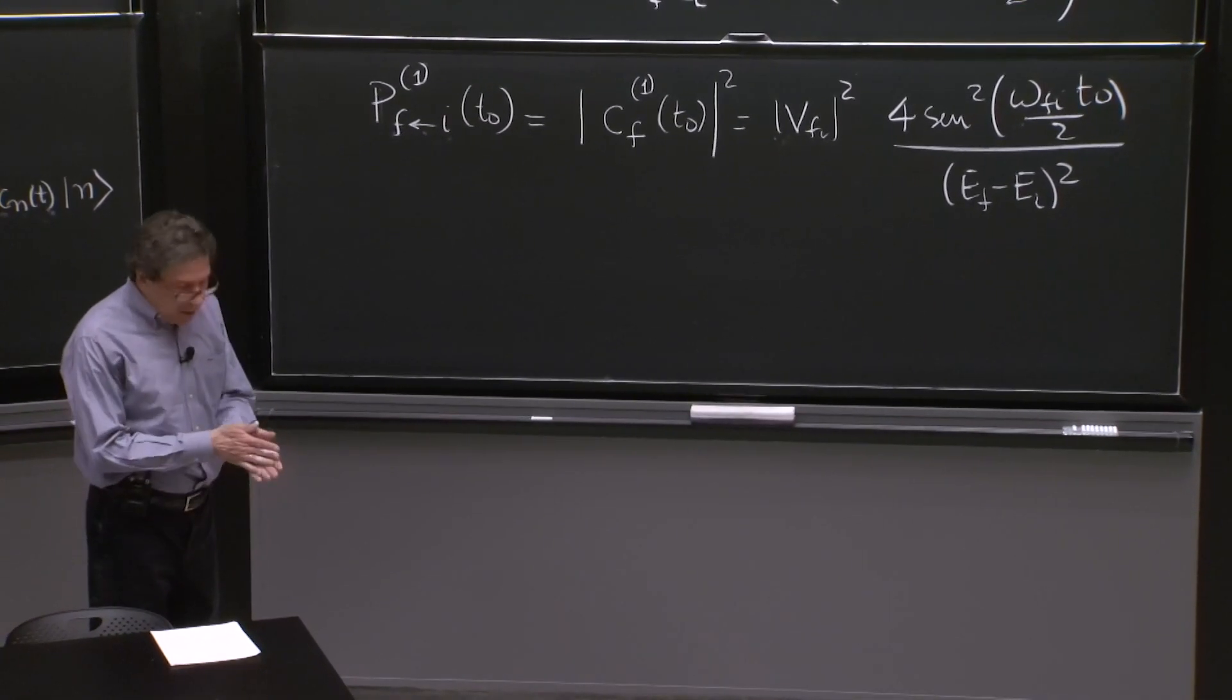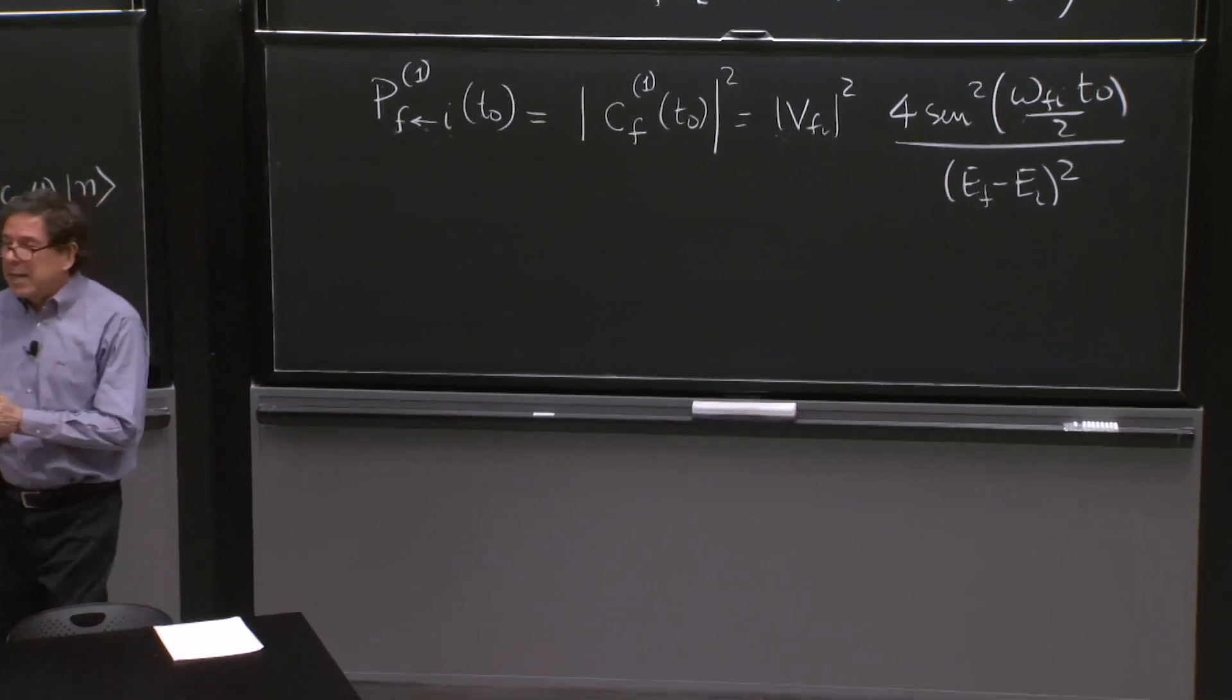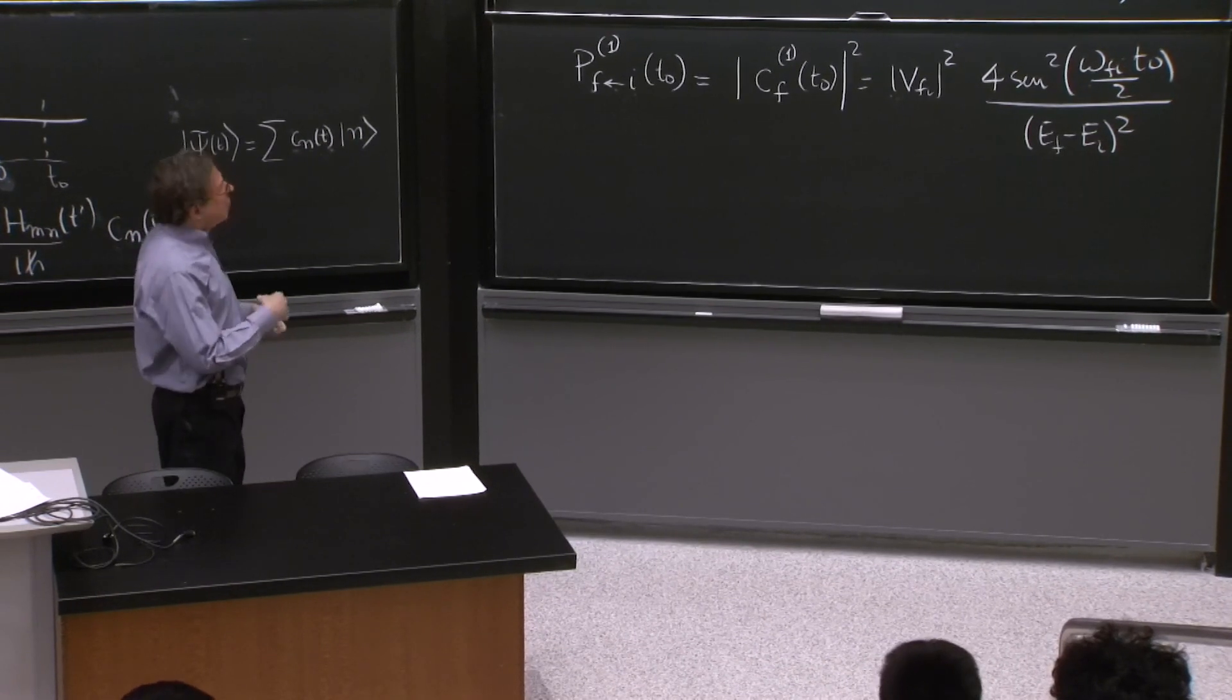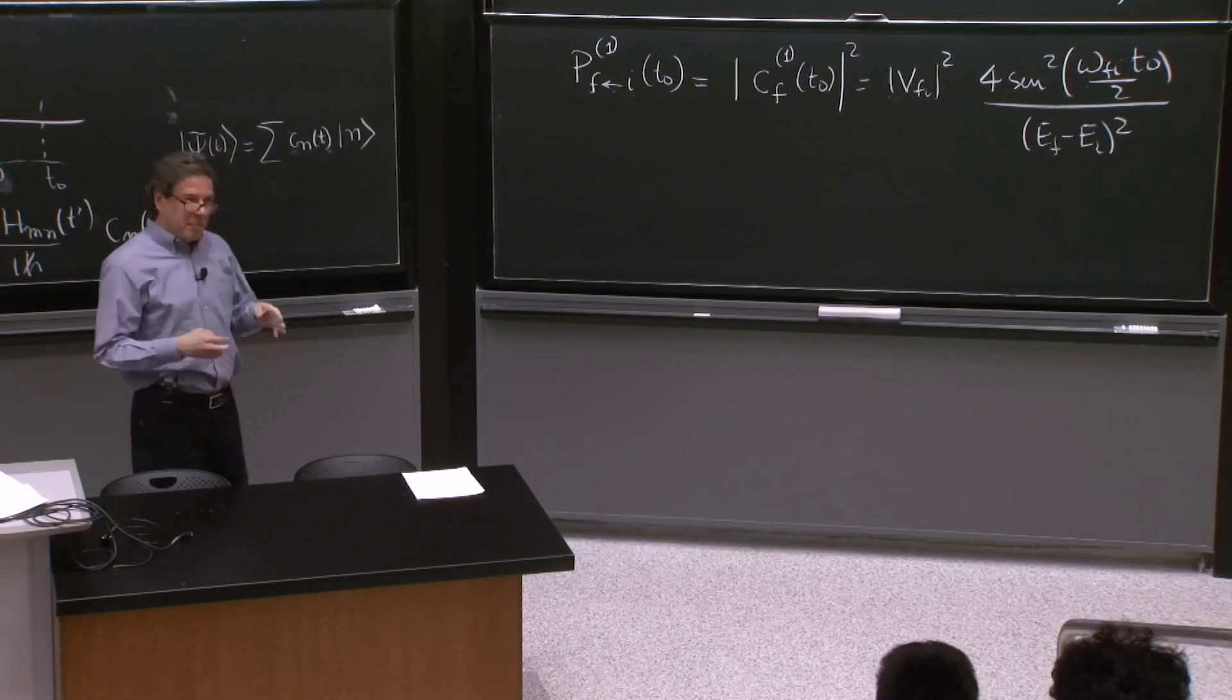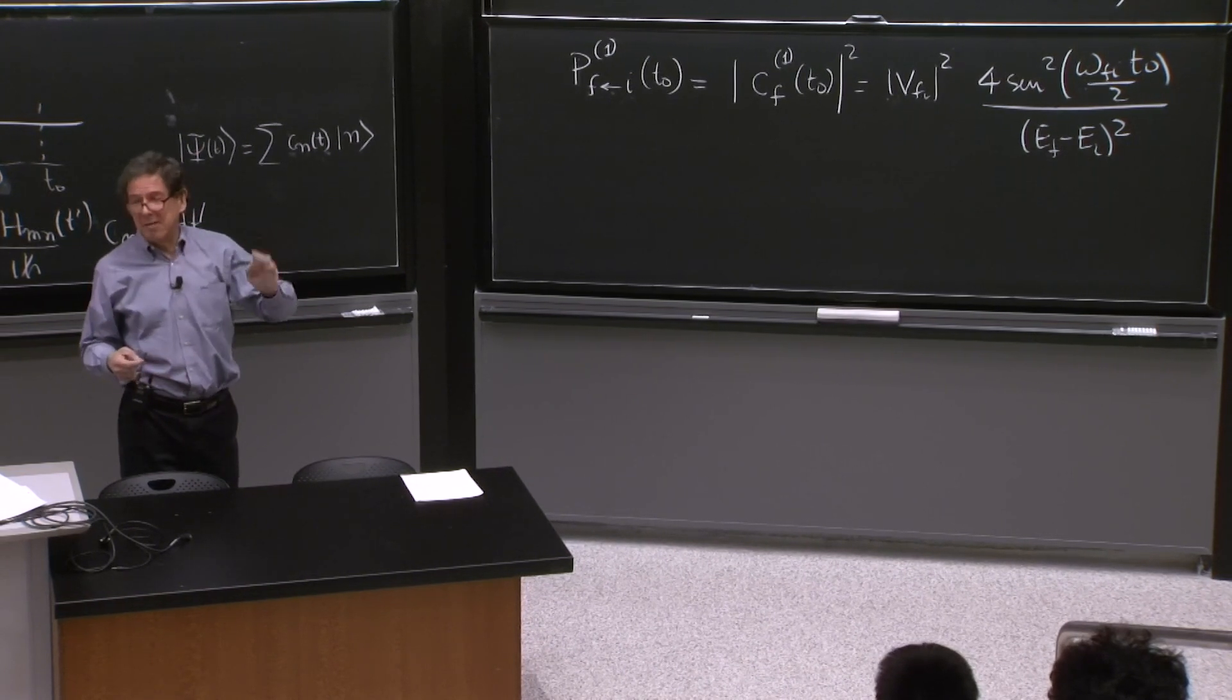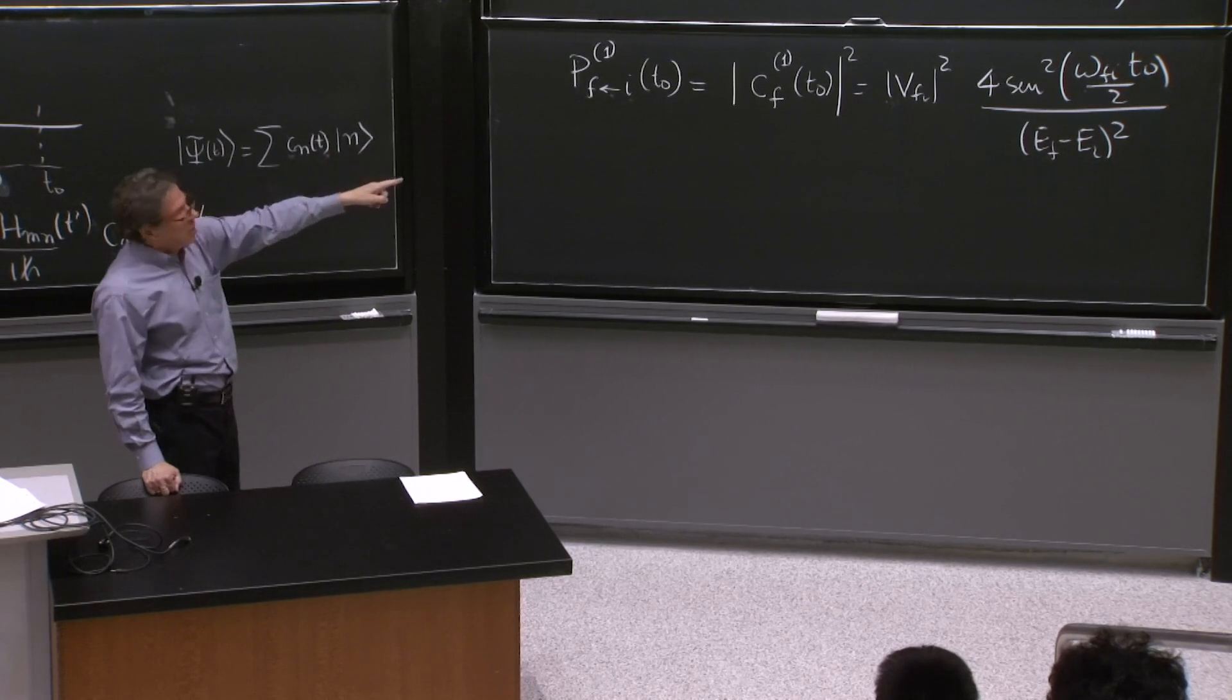There's a periodic variation on the transition probability. And what does it mean to have a weak perturbation, we can ask already. And the answer, in general, is quite simple. It's a pragmatic answer. A perturbation is weak if this answer is very little, very small.